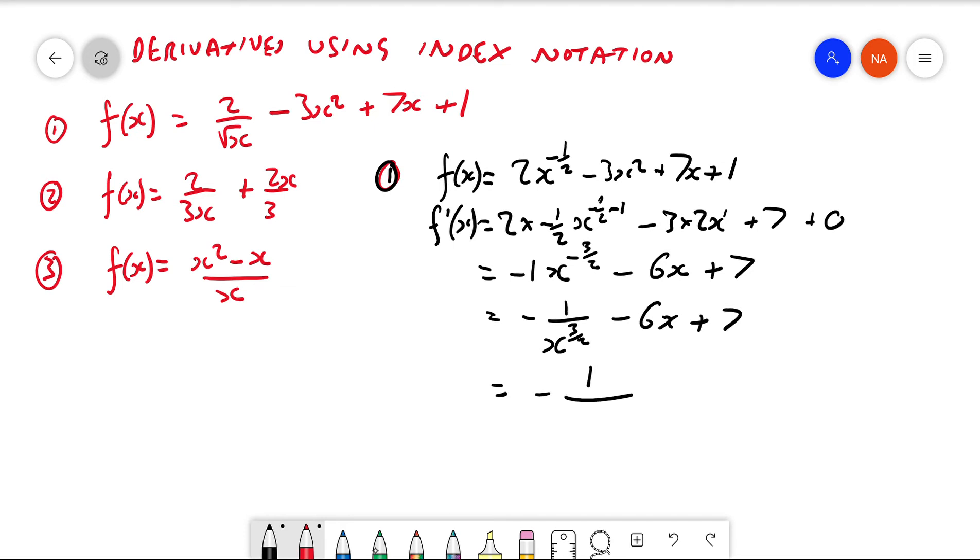This is equal to negative 1 over x to the 3/2, negative 6x plus 7, which is negative 1 over - now this is going to give us x to the power 3 square root - minus 6x plus 7. Those last three lines - so that is from there to there - there was no differentiation going on there at all.